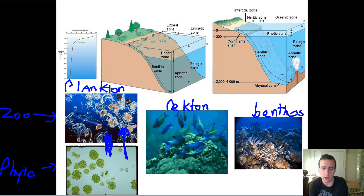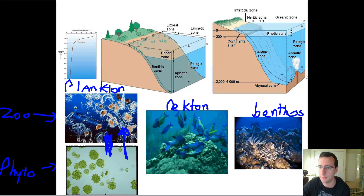These are the three kinds of animals and zones of the aquatic ecosystem. In the next video, we're going to talk about the oceanic biomes.